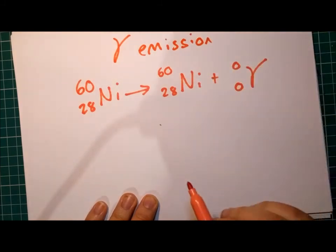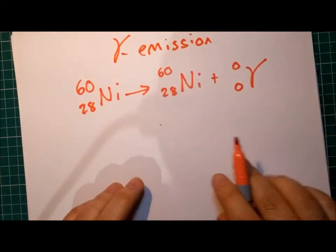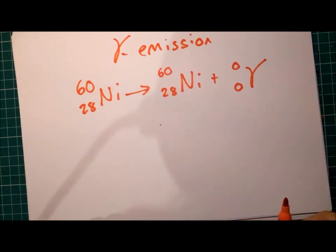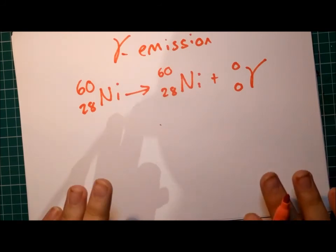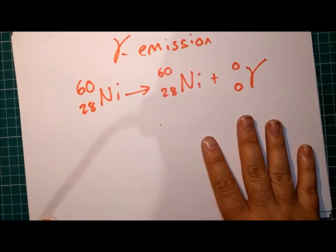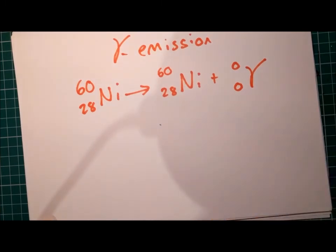It is unlikely that you will come across an exam question that asks you to complete one of these equations. Because, well, as you can see, they're just so easy. The alpha and the beta emission are much more commonly found in exams as exam questions, usually incomplete. So that you have to finish working out the mass or the atomic number of either the product element or the form of radiation that's produced.